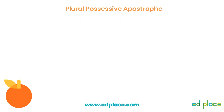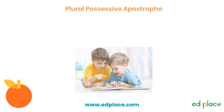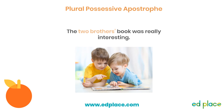Let's look at more examples. Here we have two brothers who own a book. Can you write a sentence to show that they both own it using a possessive apostrophe? Think carefully about where the apostrophe should go. Pause the video to write your sentence now. Here is my sentence — because 'brothers' is a regular plural, we just need to add an apostrophe after the S.